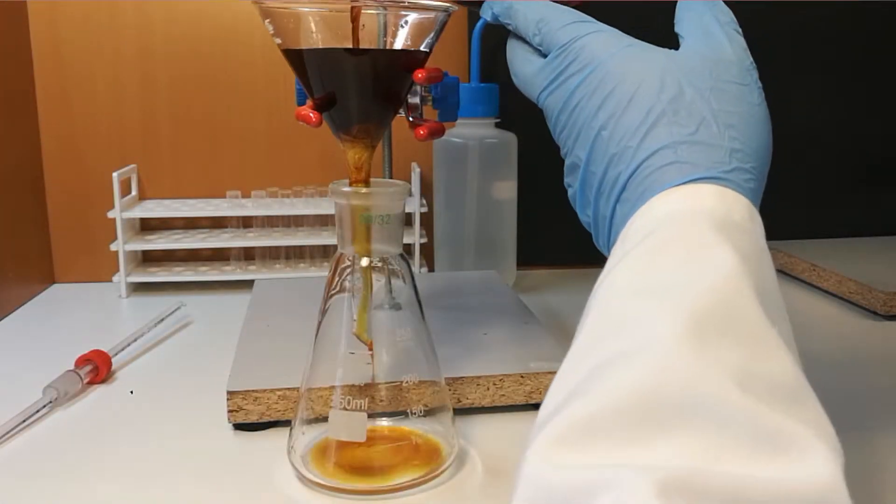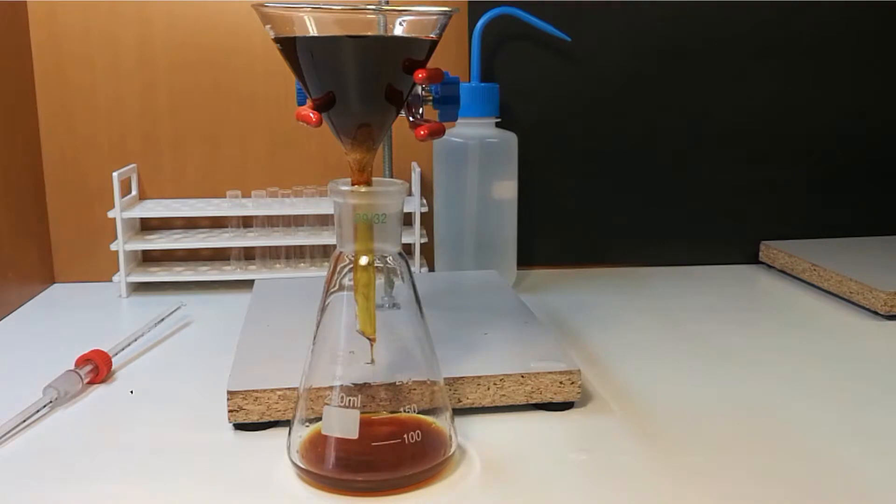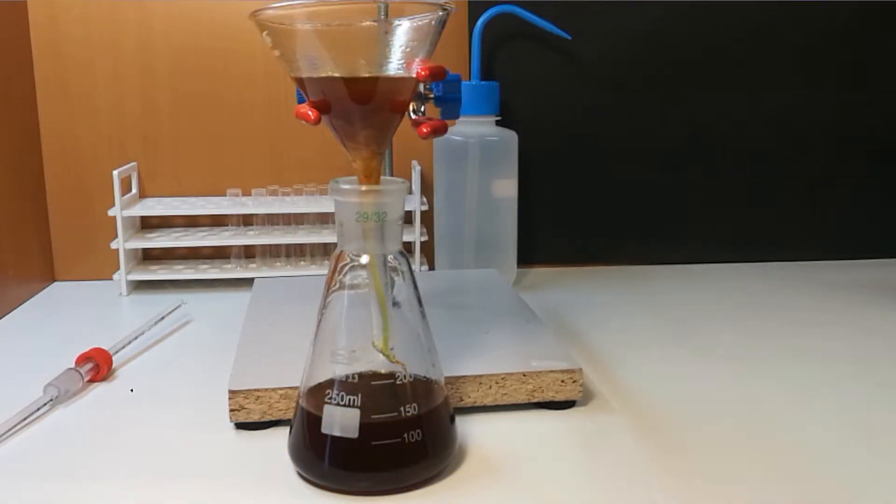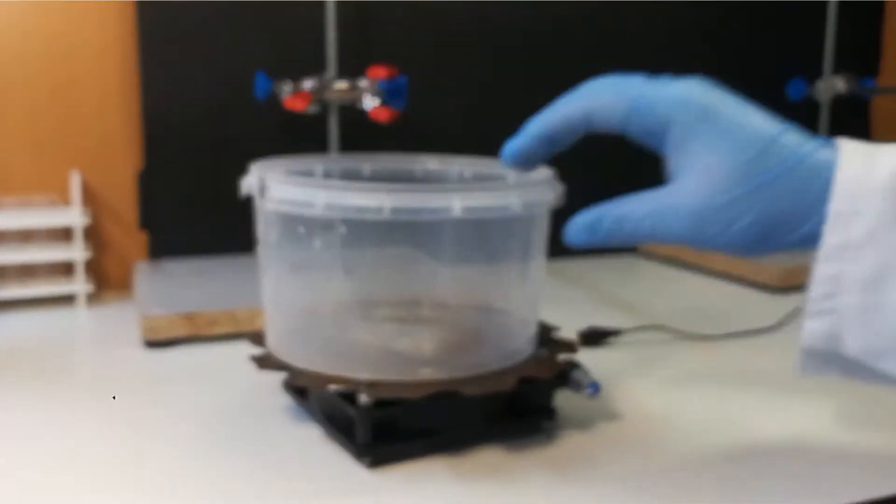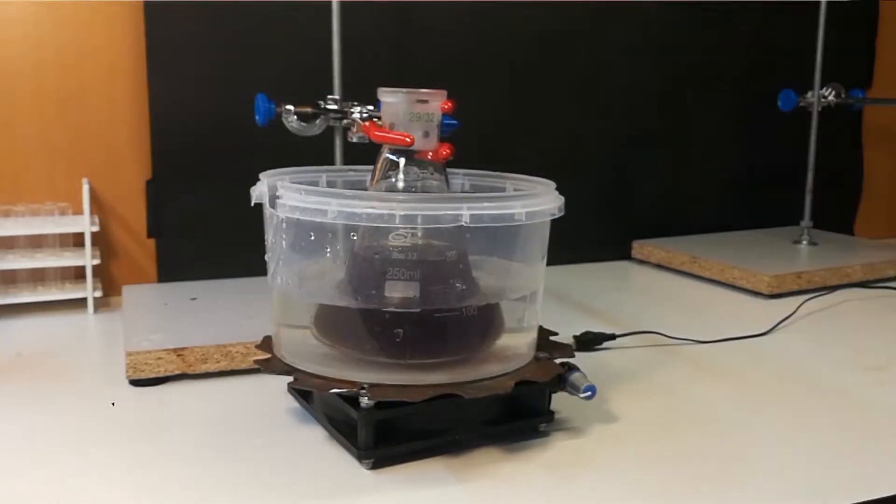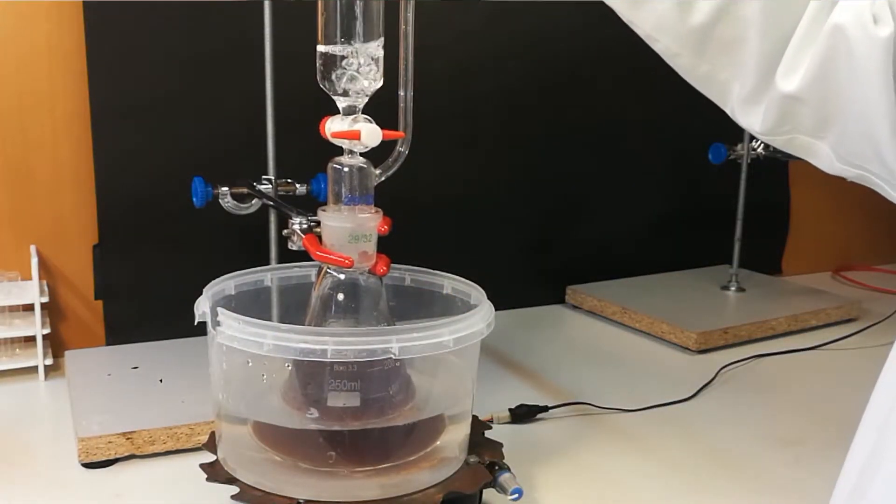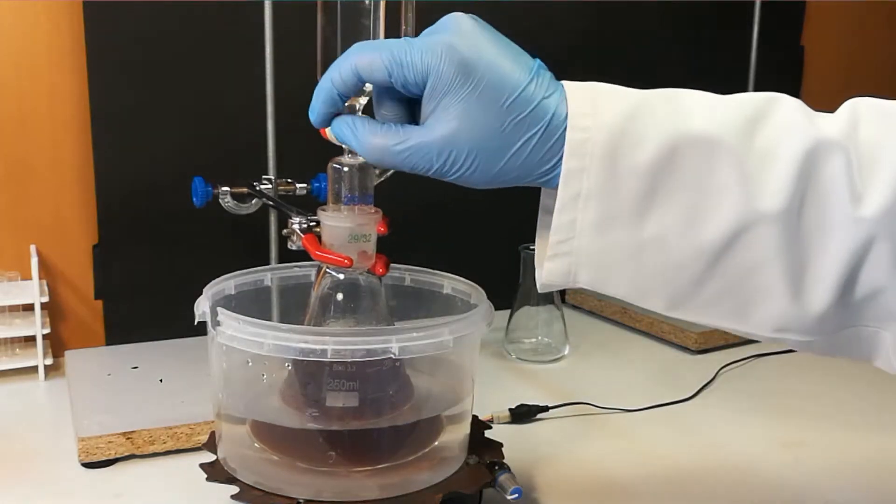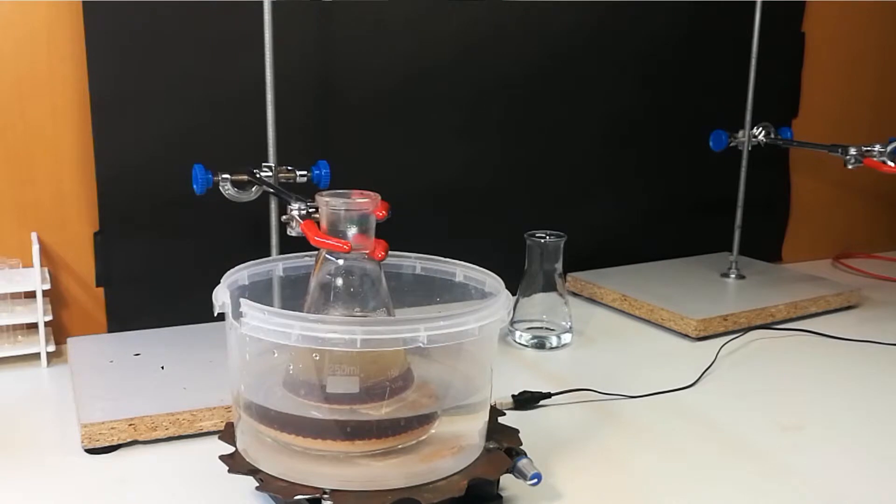Filter reaction mixture through cotton filter. Prepare cooling bath and add acid solution you made before to funnel. Drip in until pH is around 5.